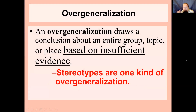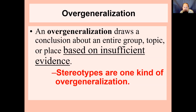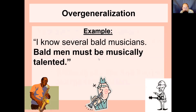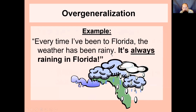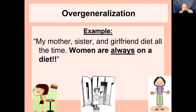Overgeneralization is drawing a conclusion about an entire group or topic based on insufficient evidence. Stereotypes are overgeneralizations. 'I know several bald musicians, therefore bald men must be musically talented' — that's jumping to conclusions when your evidence is insufficient. 'Every time I've been to Florida the weather was rainy, so it's always rainy in Florida' — you just happened to go when it was raining. 'My mother, sister, and girlfriend diet all the time, therefore women are always on a diet' — maybe the women in your life diet a lot, but that's not proof that all women do.